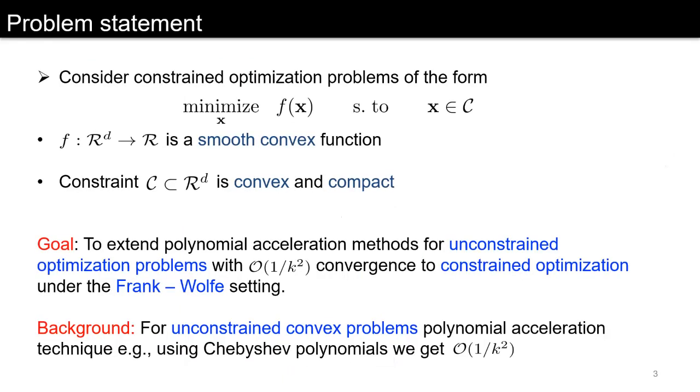The problems that we consider are constrained optimization problems of the form minimize_x f(x) subject to the constraint x belongs to C, where the function f is assumed to be a smooth convex function and the constraint set to be convex and compact.